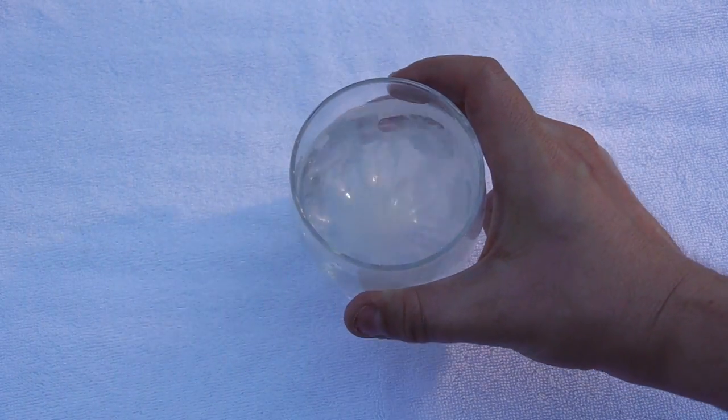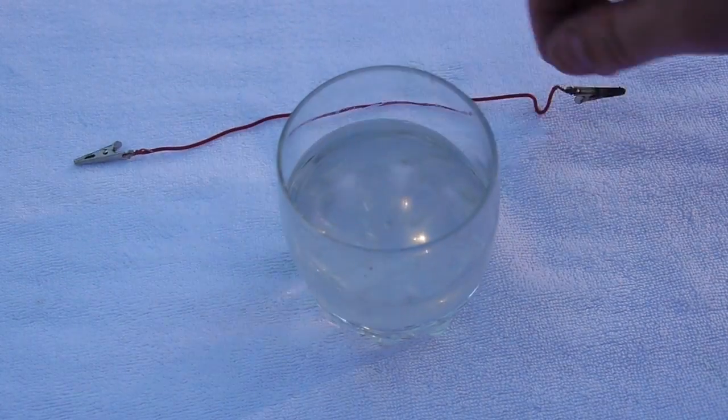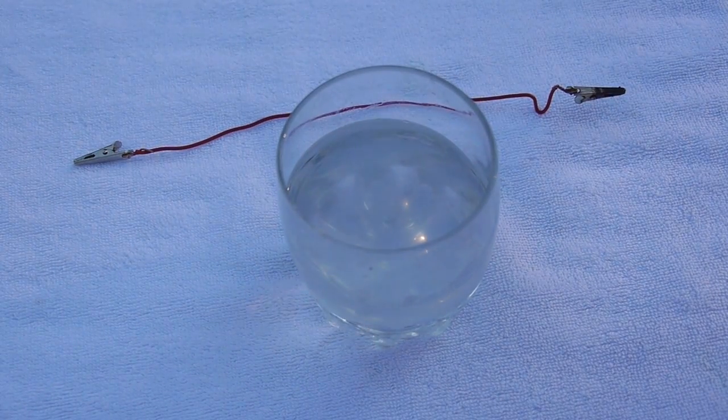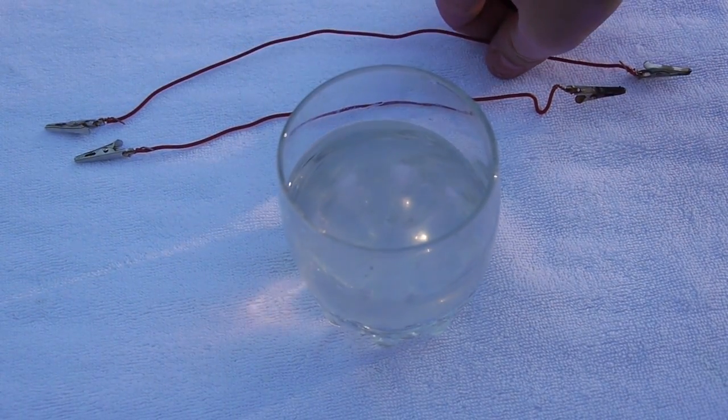We're also going to need a couple wires and a battery so that we can hook the wires up to the battery and run the charge through the solution itself. This is going to help us with the electroplating process.